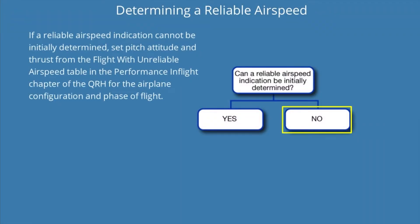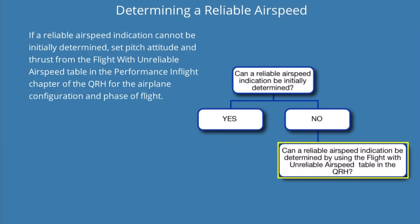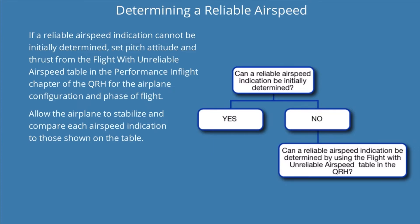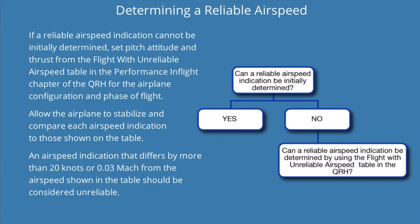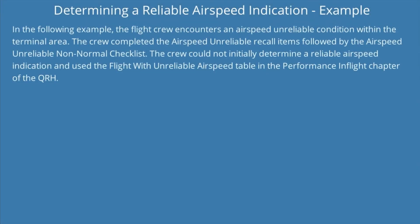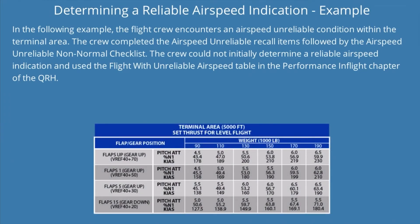If a reliable airspeed indication cannot be initially determined, set pitch attitude and thrust from the flight with unreliable airspeed table in the performance in-flight chapter of the QRH for the airplane configuration and phase of flight. Allow the airplane to stabilize and compare each airspeed indication to those shown in the table. An airspeed indication that differs by more than 20 knots or 0.03 Mach from the airspeed shown in the table should be considered unreliable.